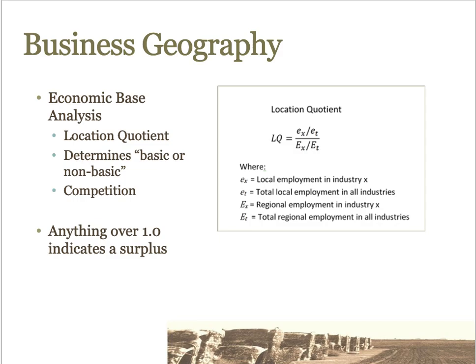One of the most useful methodologies available to business geographers is economic base analysis, a technique used to determine whether any particular economic activity functions as a basic or non-basic industry. A standard mathematical formula called the location quotient is most often used to identify the economic basis for places at various scales — in other words, which industries are bringing money in from outside and which serve mostly a local population. Anything over 1.0 indicates a surplus.